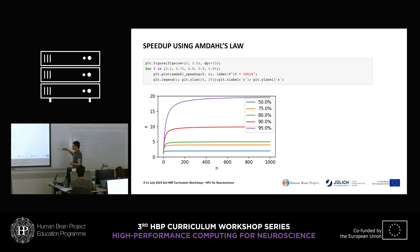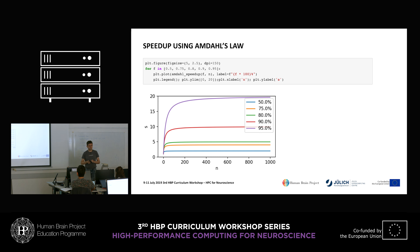If we can only parallelize half of our program, then the other half remains serial — which means we can get a maximum speed-up of 2.